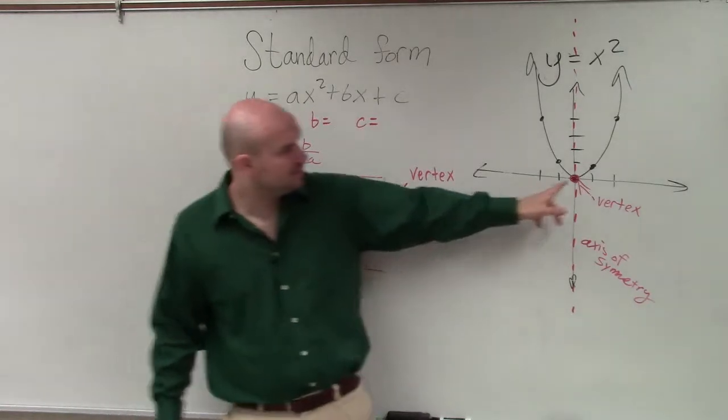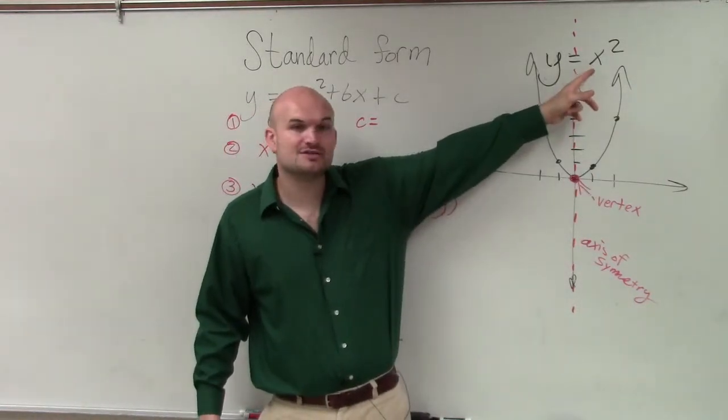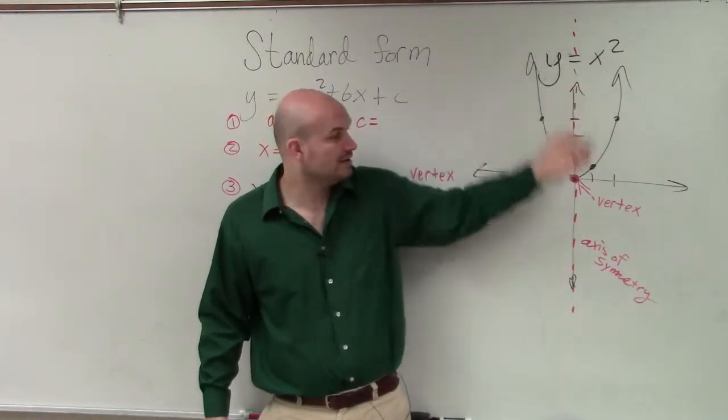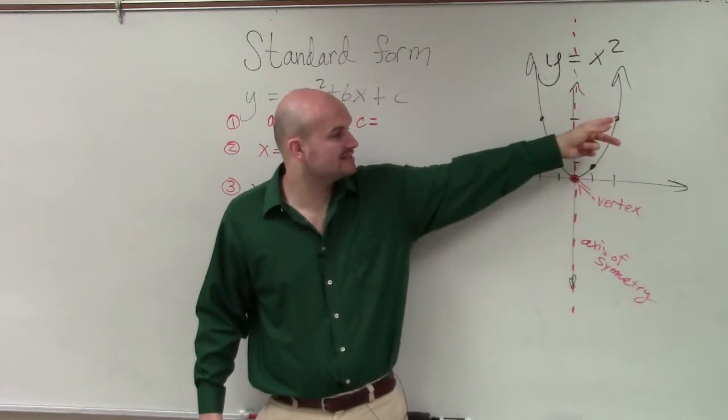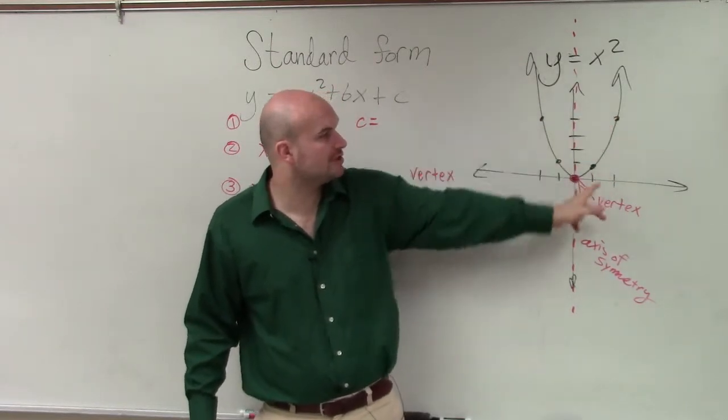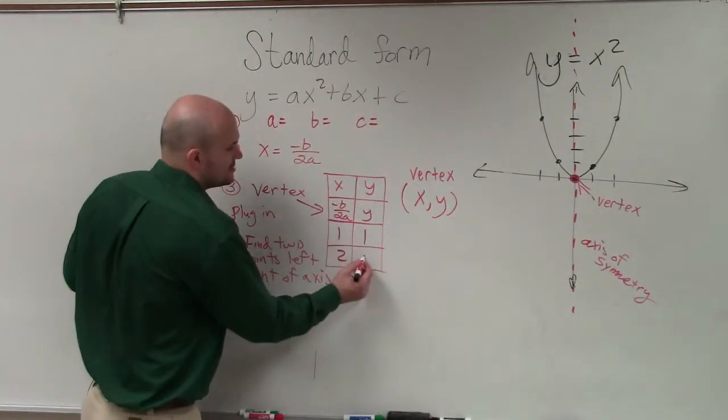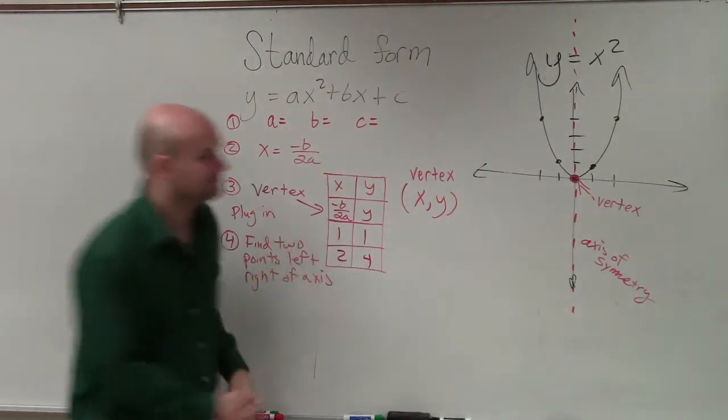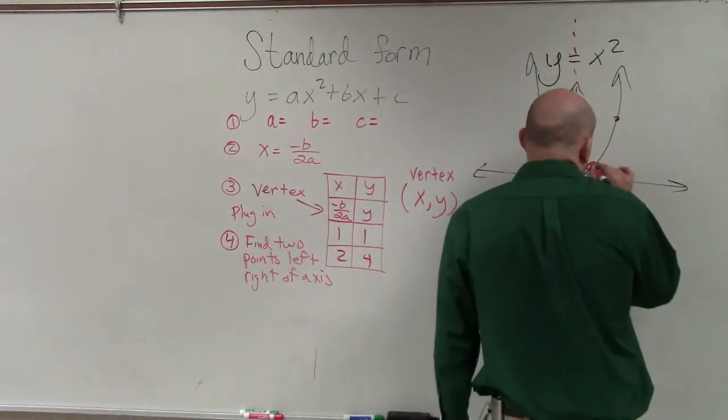So if I pick two, I plug two in for x, two squared is four. So four up, in this case, is over two, up four. So those are my two points. So you plot your two points.